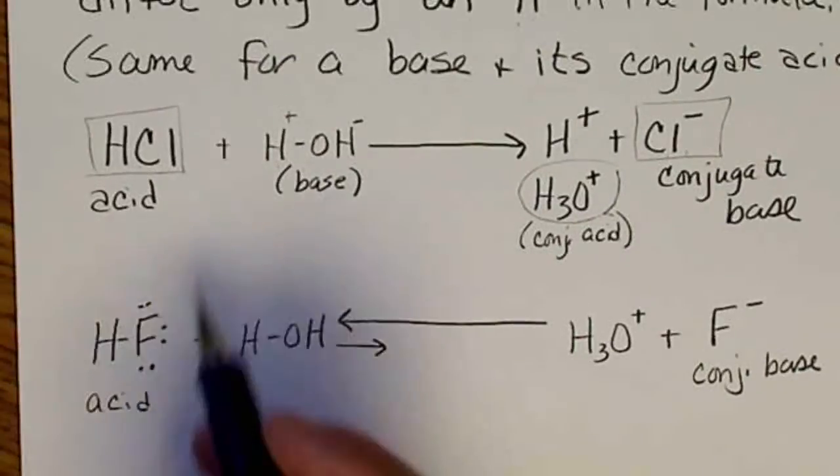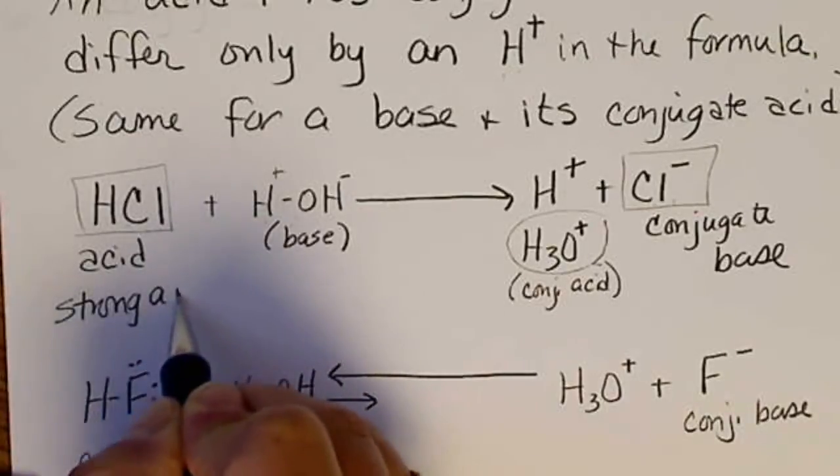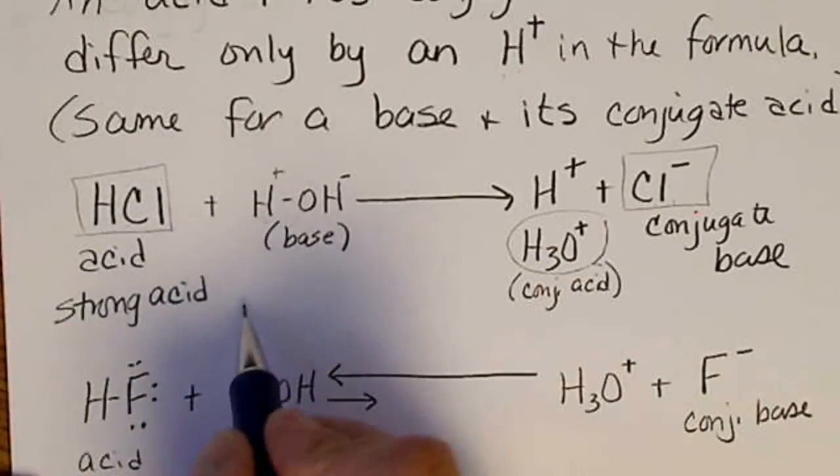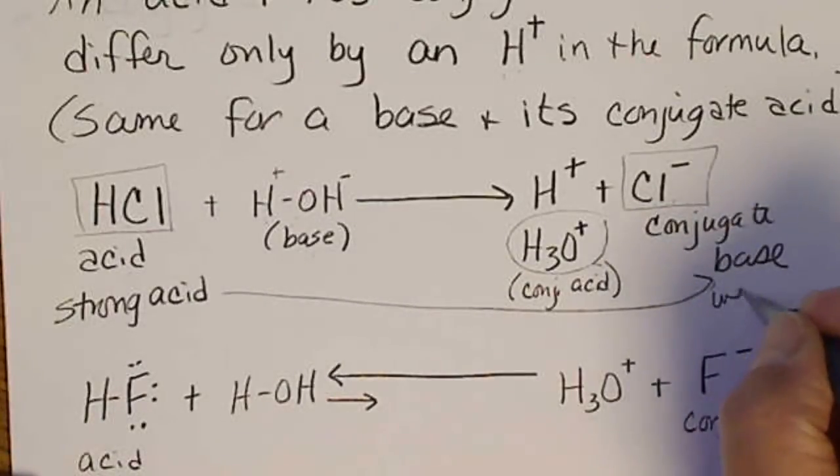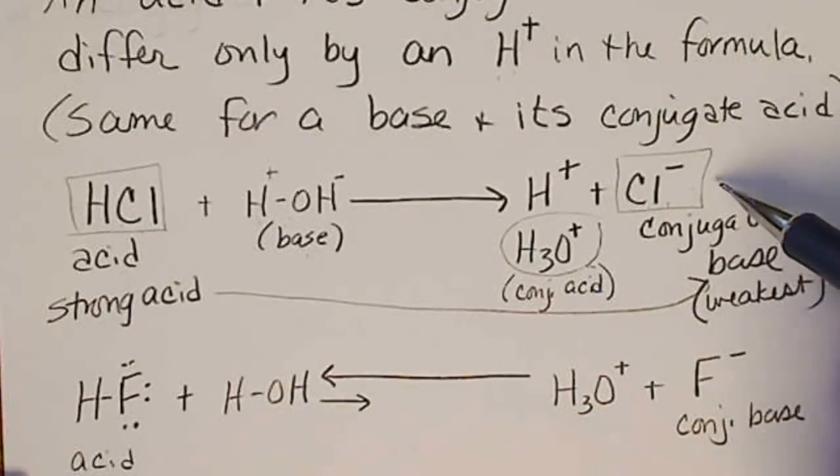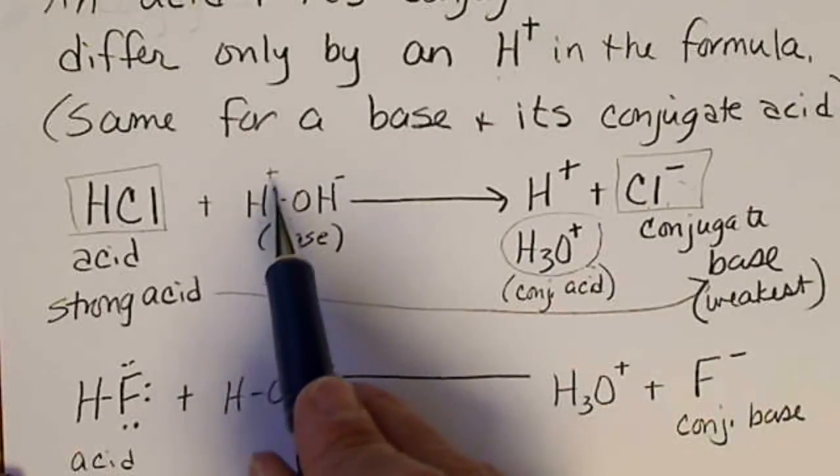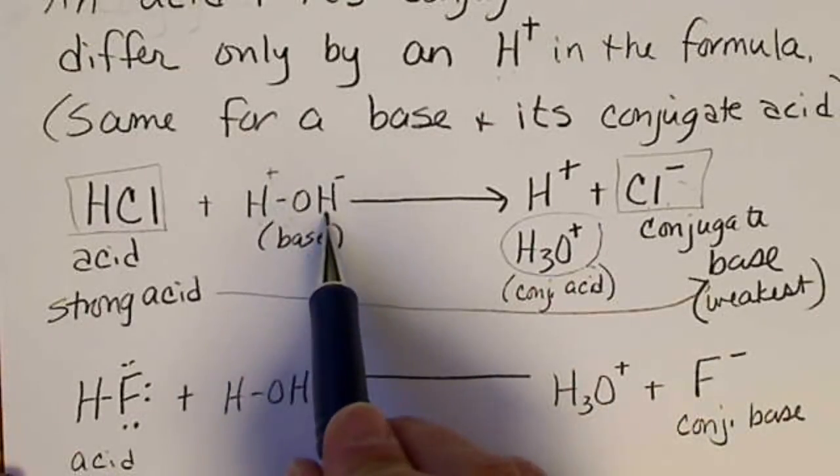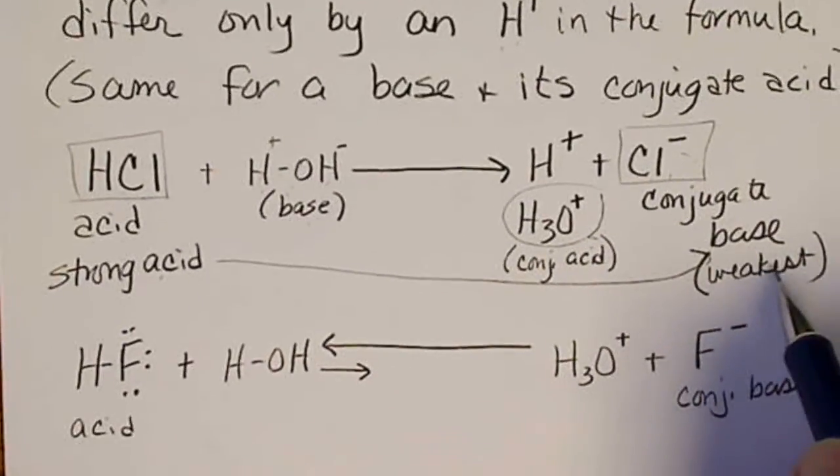So this is HCl, this is a strong acid. So a strong acid is going to end up having the weakest conjugate base. So chloride would be a very weak base. That means in the presence of water, it is not going to pull off an H+ from water and leave behind an OH-. So the stronger the acid, the weaker the conjugate base.